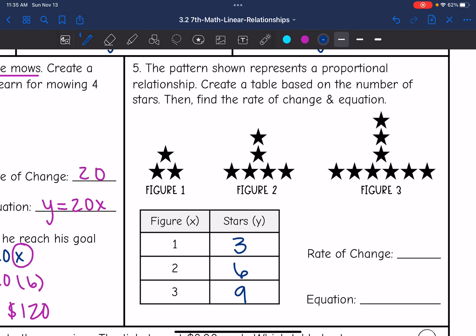Let's find the rate of change by doing y divided by x or 3 divided by 1, which would be 3. So the rate of change is 3, which means the equation is y equals 3x, which matches our table. I am multiplying x by 3 to get the number of stars.